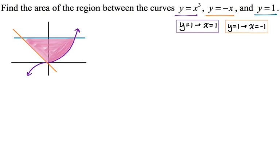Here's our region. We need to identify a bottom, a top, a left, and a right. The right curve and the left curve defining the region are clear, and that's the top. The bottom is the hardest, but since the left and right intersect at zero, the origin serves as the bottom. Since we're using dy, the bounds have to be y values, and the functions have to be expressed as x equals — x as a function of y.